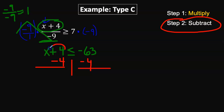On the left side, positive 4 and negative 4 form a 0 pair, so we're left with x. Negative 63 minus 4, signs are the same, so we add them together. 63 and 4 make 67, so we have 67 negatives.